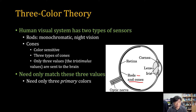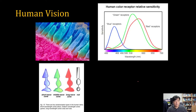We have two kinds of sensors in our human vision system — we can sense brightness and we can sense color. The rod cell looks like a rod, so we call it a rod cell. In the cone cell, there are three kinds of cone cells. Each kind of cone cell has a different sensing wavelength.